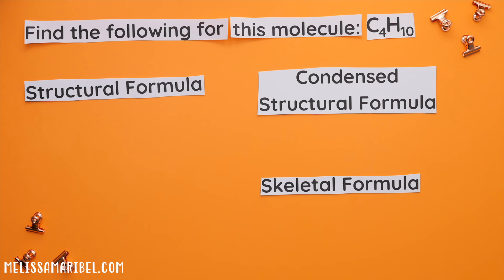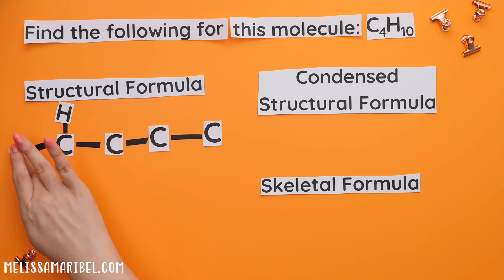Okay, here are the answers. The structural formula consists of four carbons and ten hydrogens. So this first carbon needs three hydrogens. Next carbon has two bonds, so it needs two hydrogens.